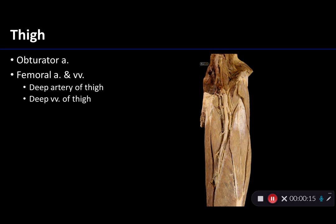As the external iliac crosses under the inguinal ligament, it becomes the femoral artery. That femoral artery descends down the anterior thigh and makes its way to the posterior aspect of the thigh through a discontinuity of adductor magnus called the adductor hiatus, which leads into the popliteal fossa.